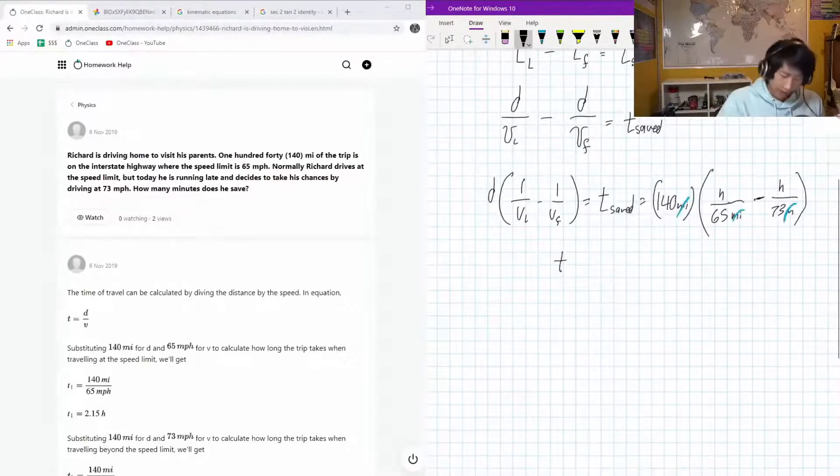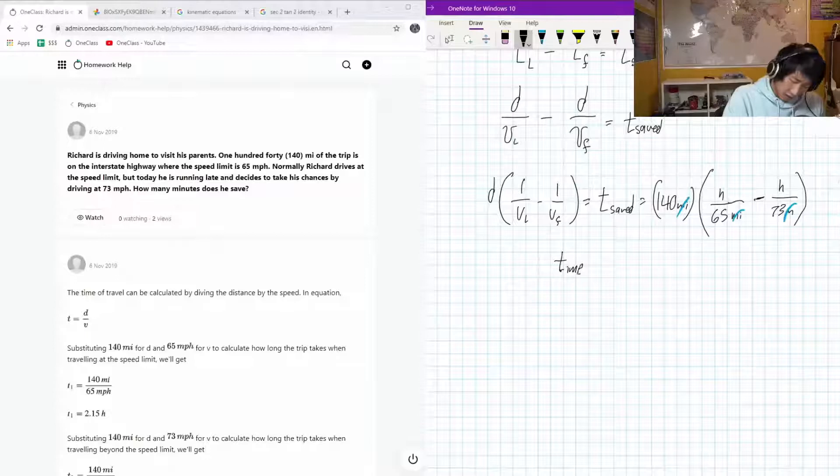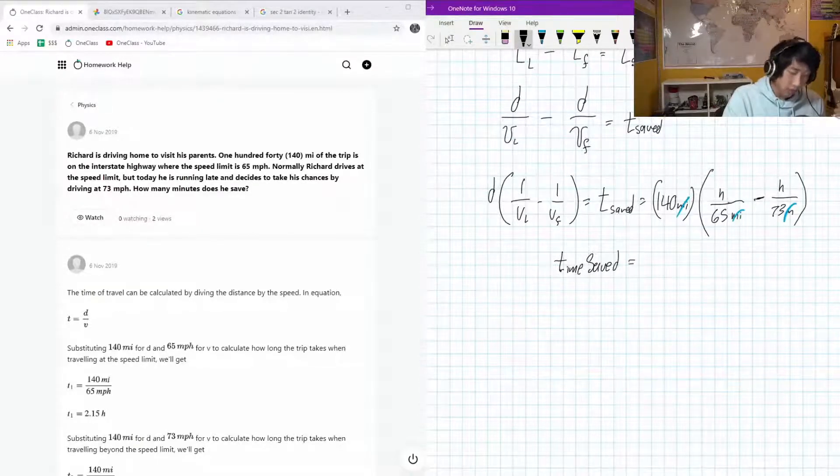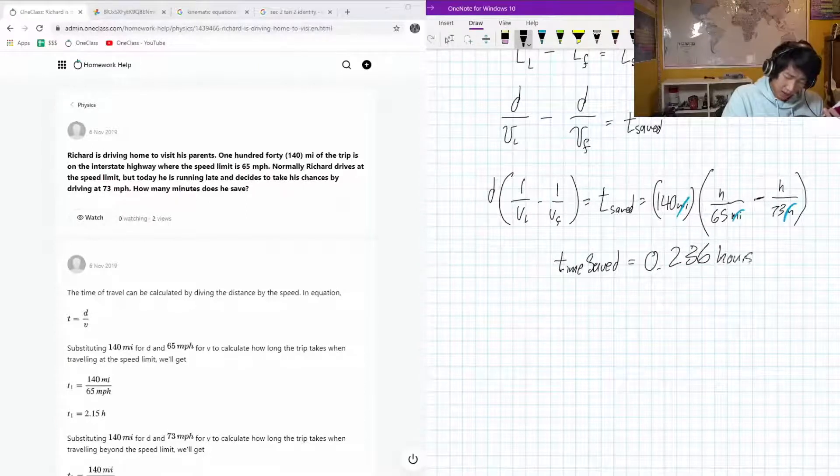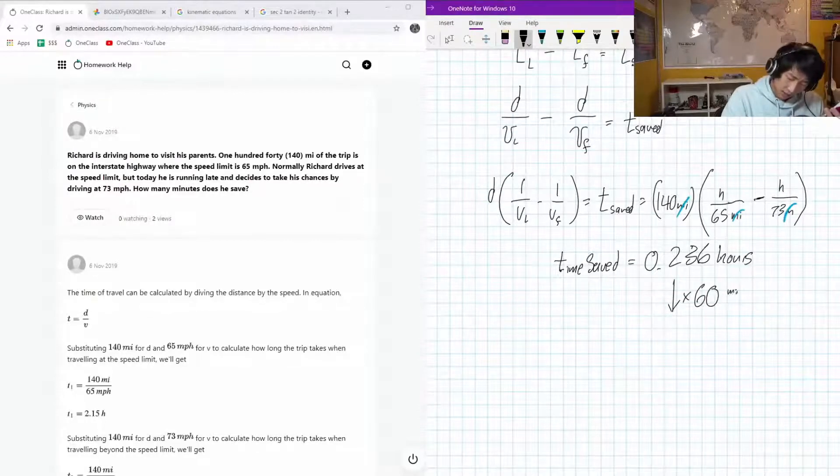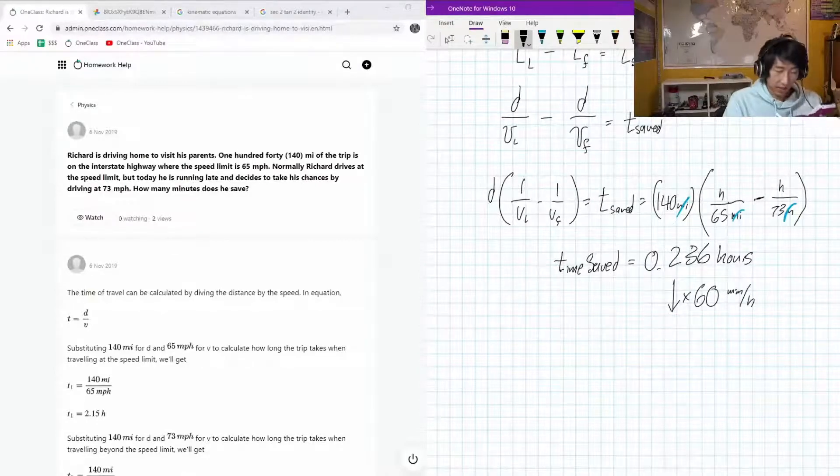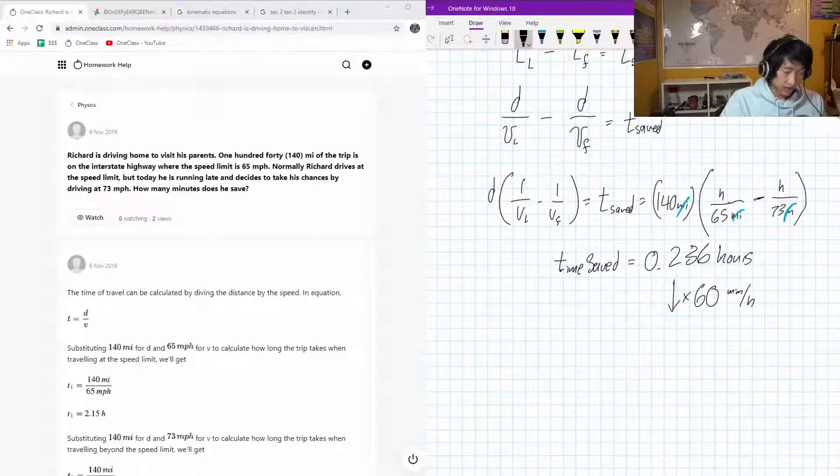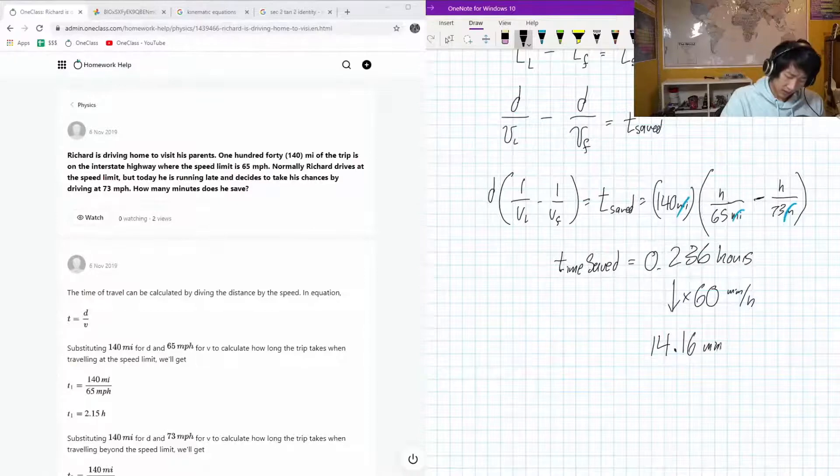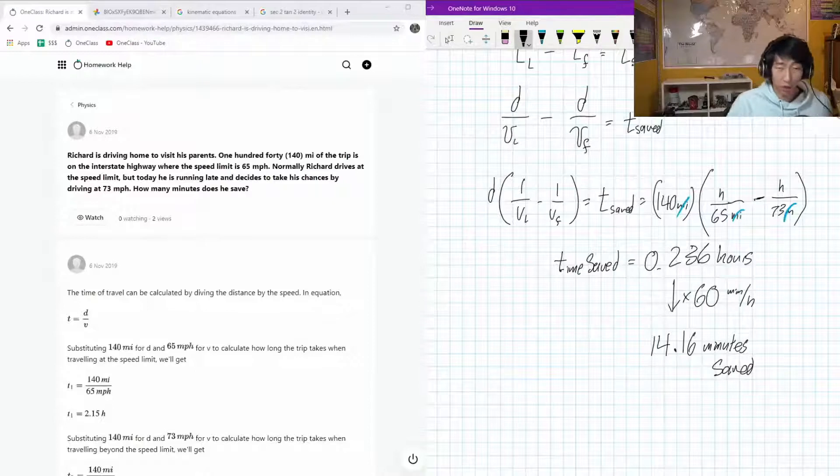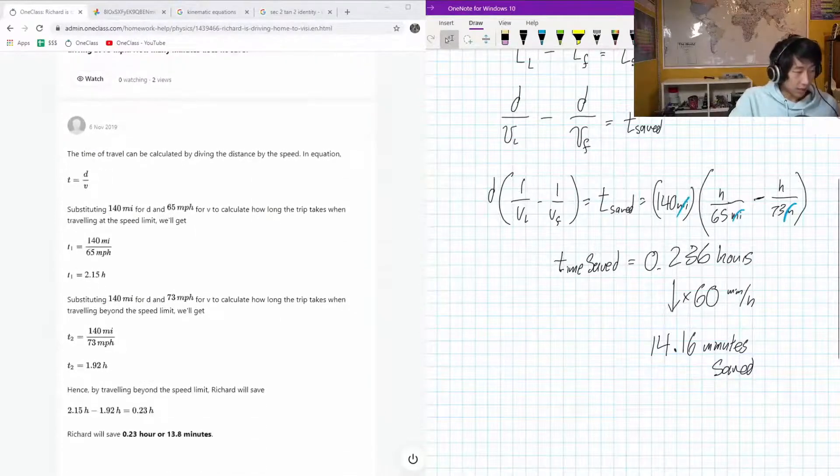140 multiplied by, in brackets, 65 reciprocal minus 73 reciprocal. My results for time saved is equal to 0.236 hours. Multiply by 60 to get minutes, 60 minutes per hour. The hours will cancel out. Multiply that by 60 and you will save 14.16 minutes.